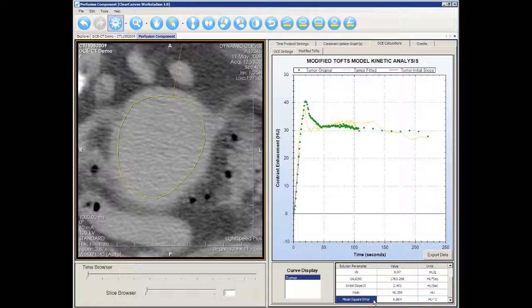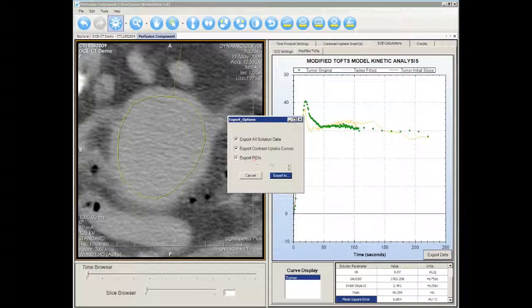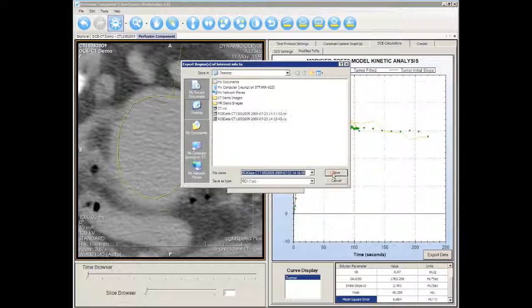The mean square error of the curve fitting is also displayed. Please refer to the website for the definitions of these quantities. You can export your results and contours by clicking the export button. Select the options and save your files.